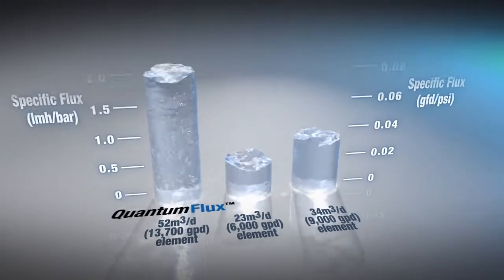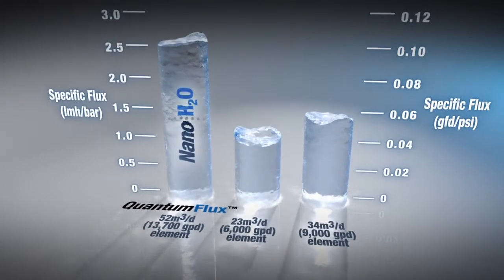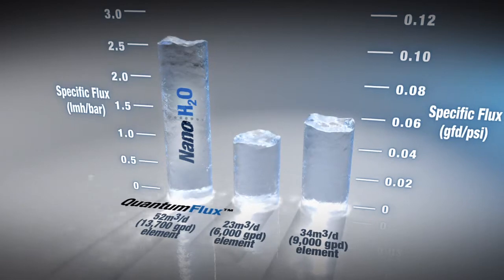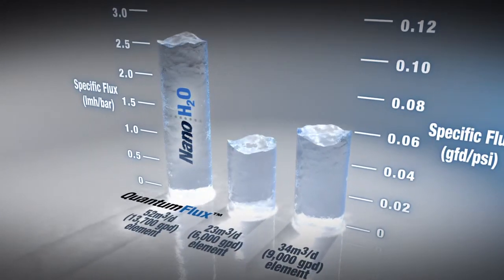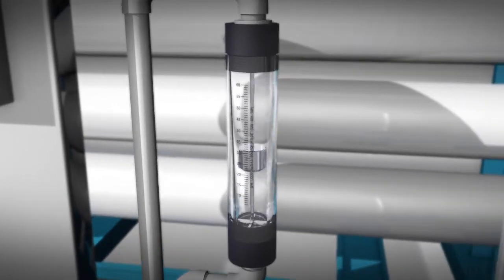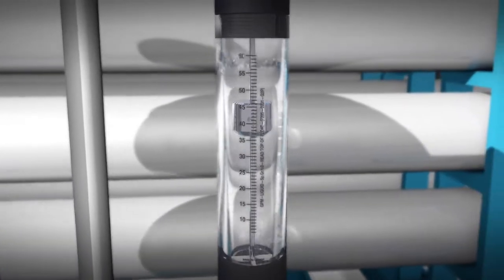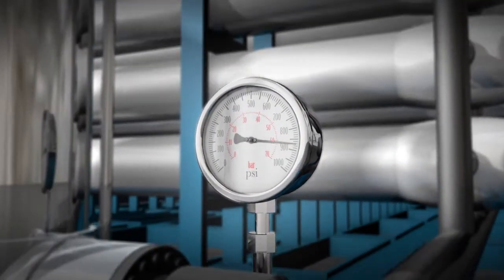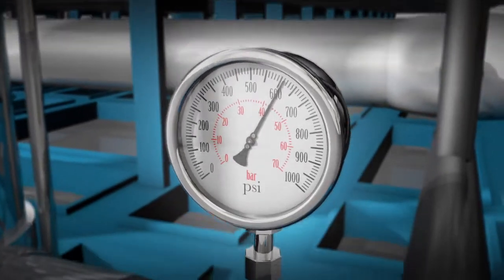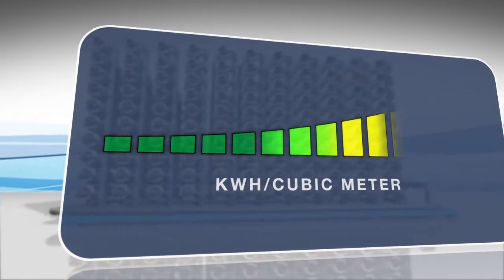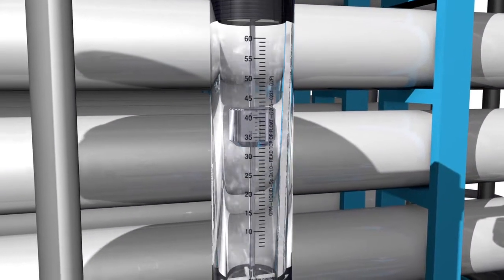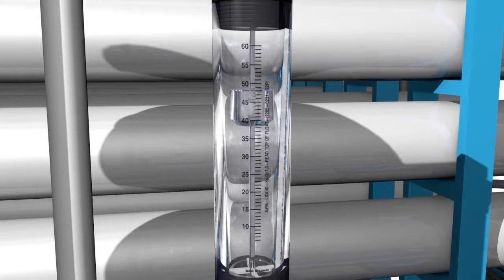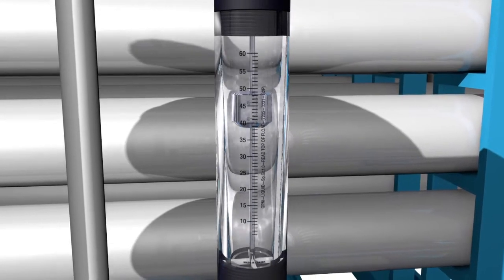Quantum flux thin-film nanocomposite membranes provide significantly higher flux than traditional thin-film composite membranes. The result? Desalination plants using quantum flux membranes produce more water with less energy by lowering feedwater pump pressure, delivering energy savings of up to 20%. In some installations, use of quantum flux membranes enabled operators to increase water production by 70%.